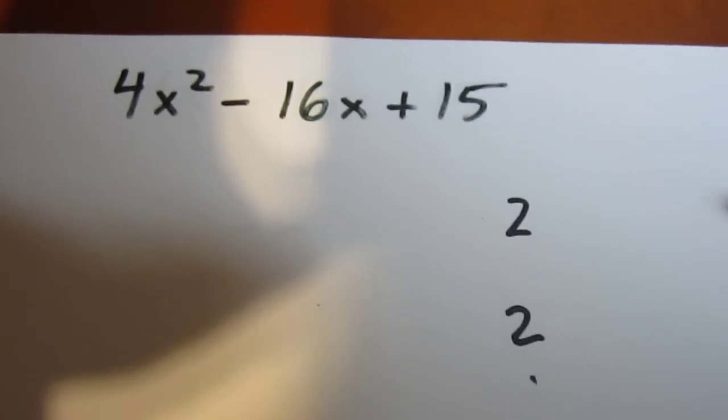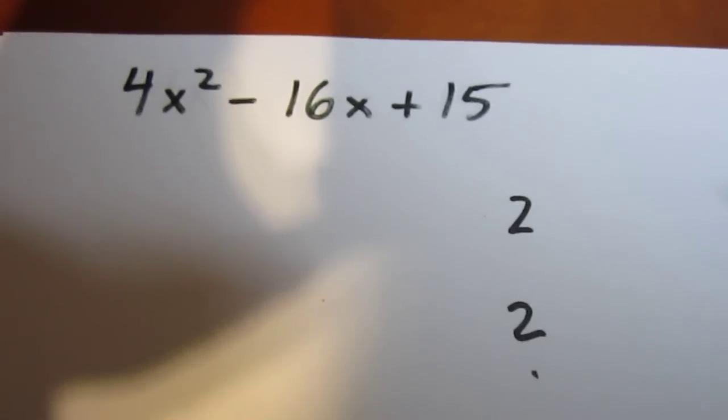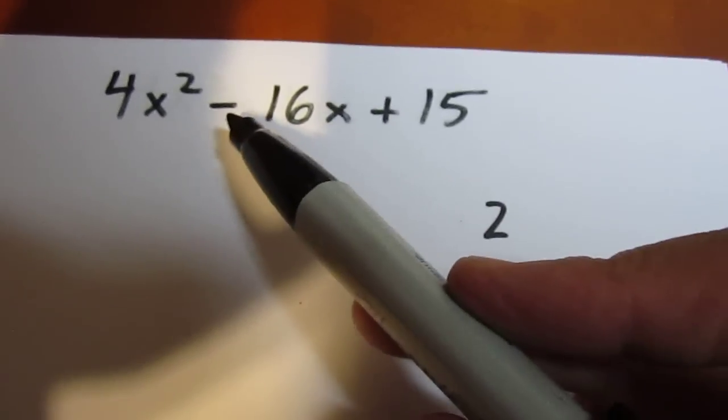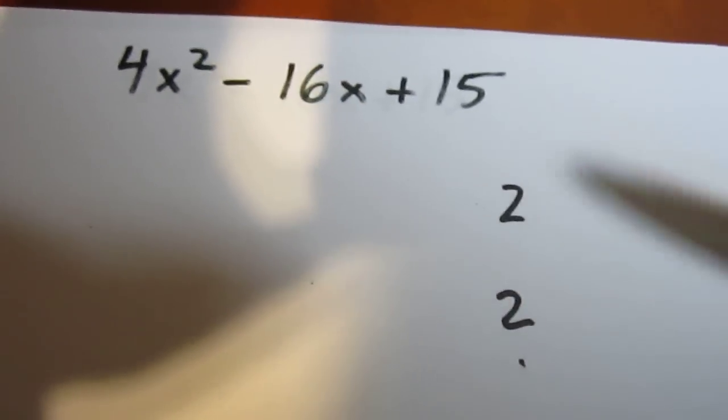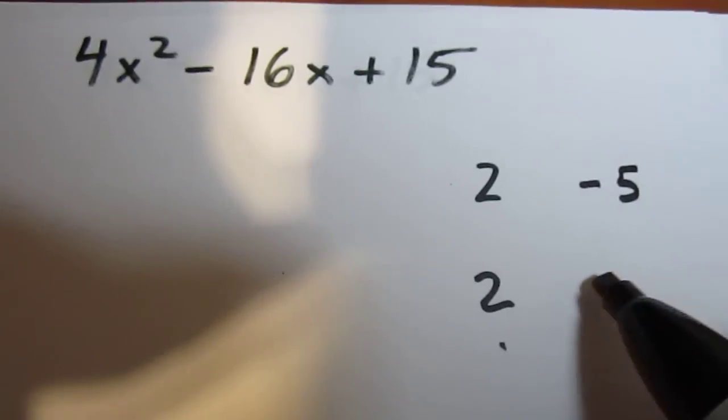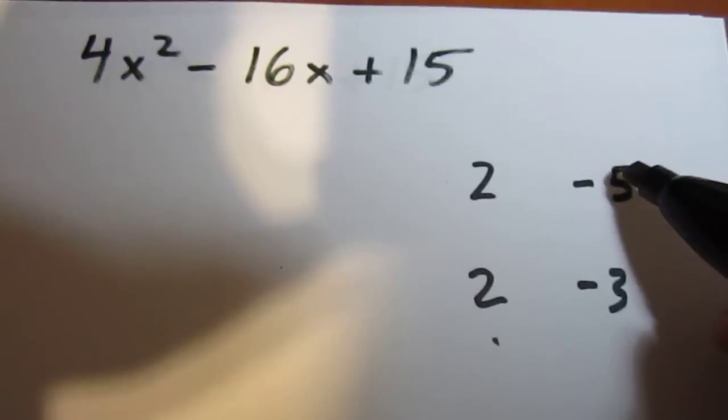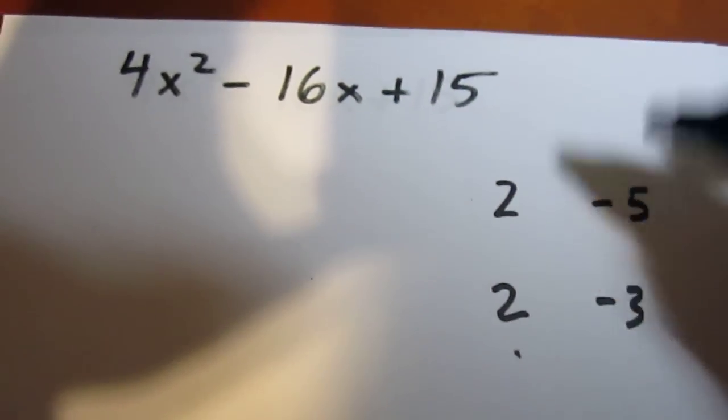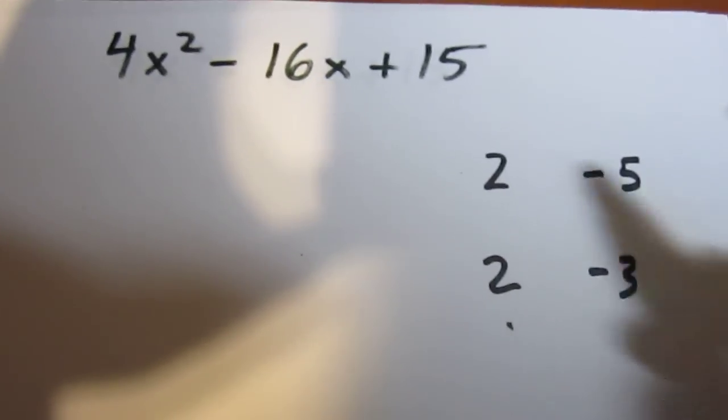And we want two numbers that multiply to positive 15. Well, right away we think 5 and 3. But notice that they have to add to a negative. We need a negative middle term. So we can have a negative 5 and a negative 3. And that will work because negative 5 times negative 3 is positive 15. But the summing of it will give us a negative number which we want.